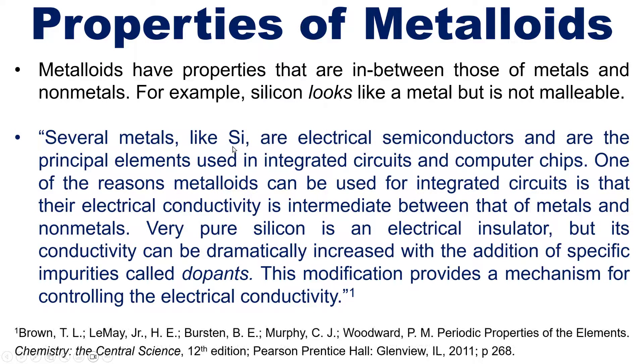And according to our text, several metals such as silicon are electrical semiconductors. That is, they are half conductors. They aren't super conductive or super nonconductive. They're somewhere in the middle, and are the principal elements used in integrated circuits and computer chips. One of the reasons metalloids can be used for integrated circuits is that their electrical conductivity is intermediate between that of metals and nonmetals. Very pure silicon is an electrical insulator. That means that it doesn't conduct electricity at all, but its conductivity can be dramatically increased with the addition of specific impurities called dopants. This modification provides a mechanism for controlling electrical conductivity.